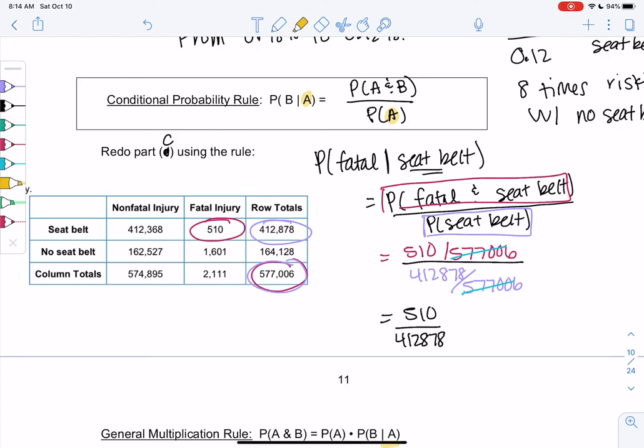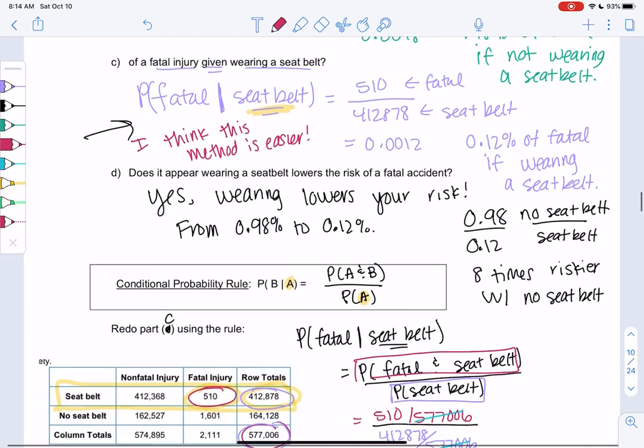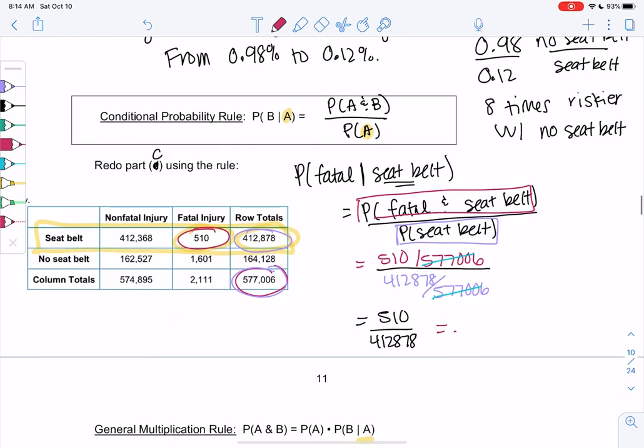Which is what we did the first time. We looked only at the seatbelt row. We did 510 out of 412,878. So I think that was easier, what we did in Part C. Notice we're getting the exact same fraction, but I think we did more work for it. So we still get 0.0012. I prefer not to use formulas. I think formulas are more work and a little more confusing.